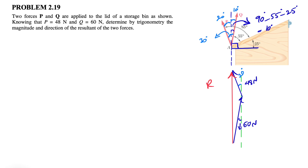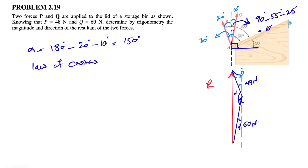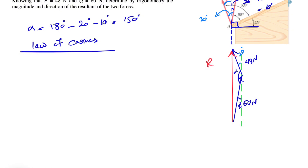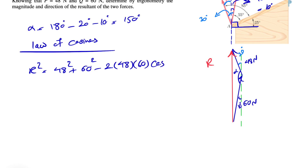Now we can find this angle. If we call it alpha, alpha would be 180 minus 20 degrees minus 10 degrees, which equals 150 degrees. Now that we have that, we can use the law of cosines to find the magnitude of R. So R squared equals 48 squared plus 60 squared minus 2 times 48 times 60 times cosine of alpha — the angle in front of R.